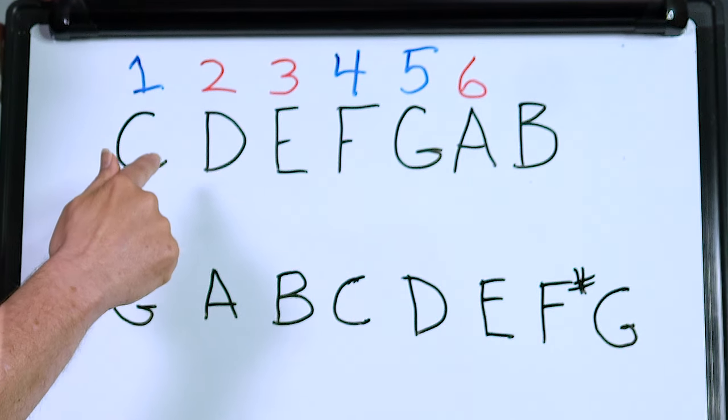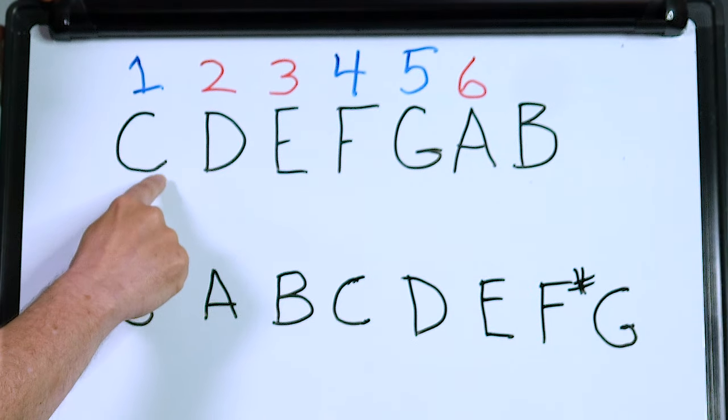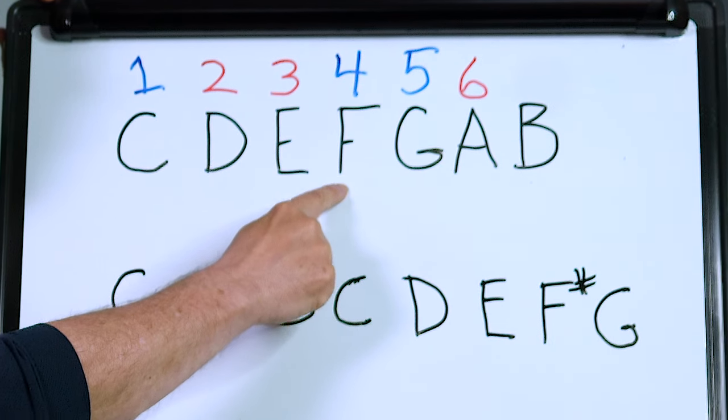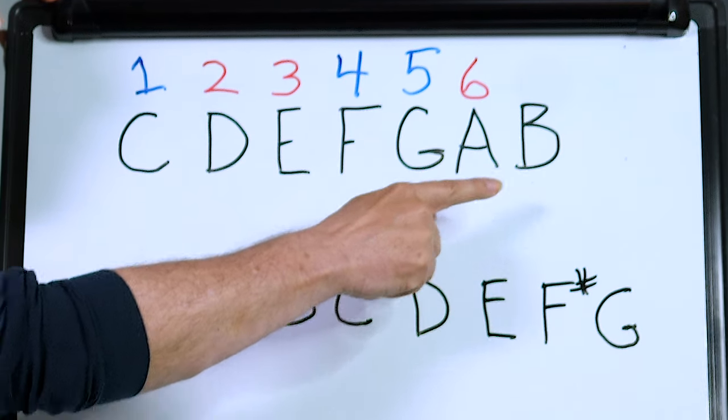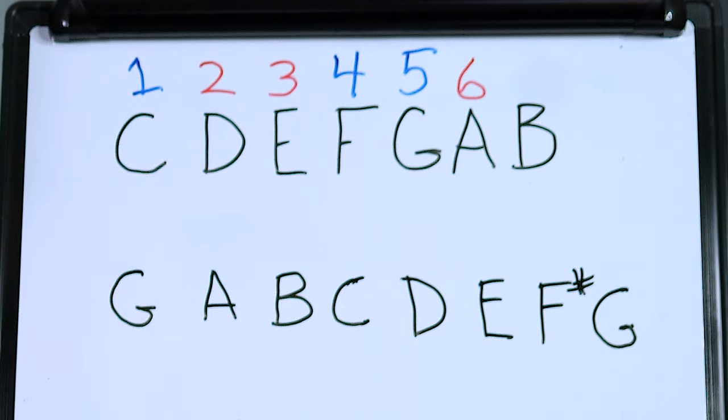We can number the notes: the first one being number one, number two, number three, number four, number five, and number six. I left seven out for a reason I'll explain in a minute.